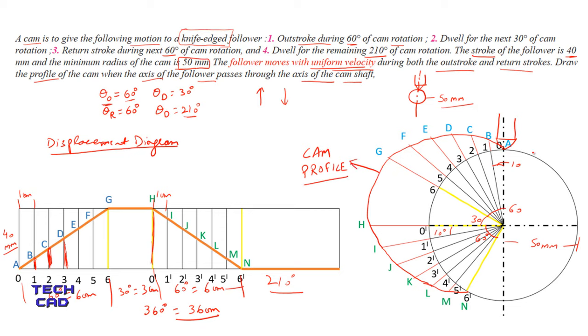Once all alphabets have been located, join all these points freehand to complete the cam profile. This is the cam profile when your follower moves with uniform velocity during both outstroke and return stroke. Thank you everyone.